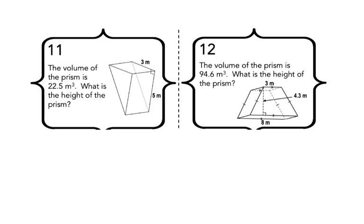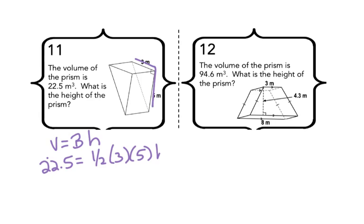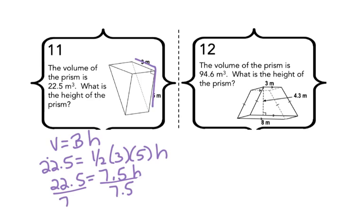Let's go over 11 and 12. The volume of a prism is 22.5. What is the height of the prism? We have a triangular prism. Remember, our volume is capital B times h. We know what our base is, which is our triangle. We have both legs, so the volume is 22.5 equals one half times 3 times 5 times h. We're going to do one half of 3 times 5, which is 7.5. So 22.5 equals 7.5h. We divide both sides by 7.5, and h will equal 3.